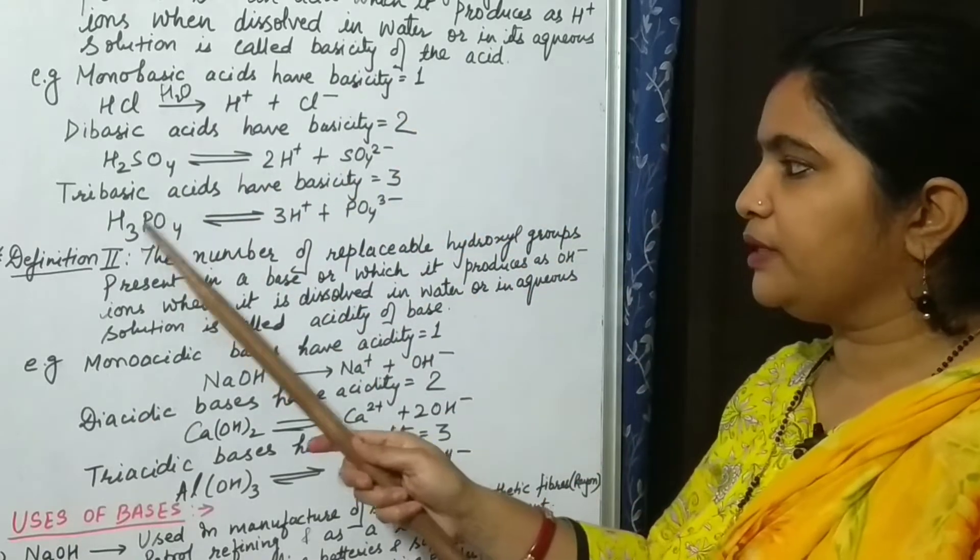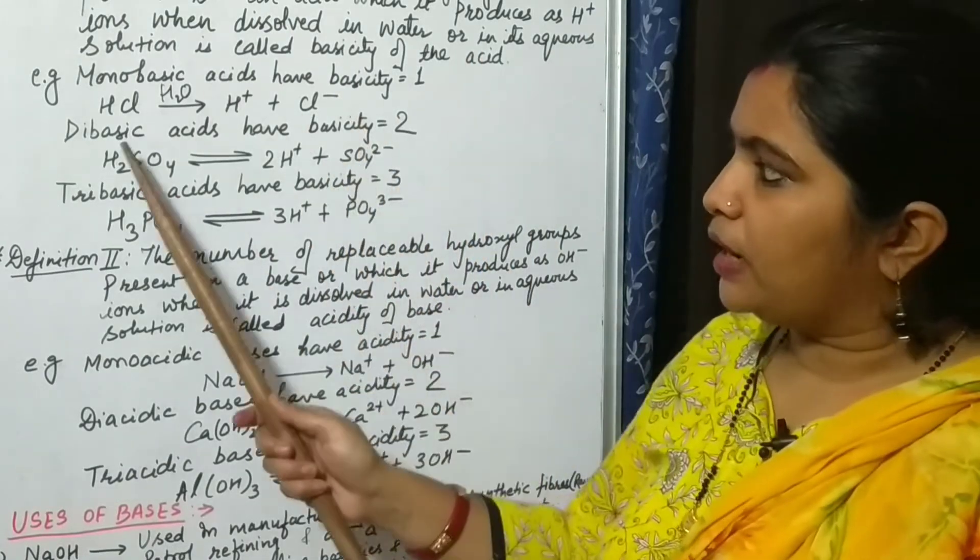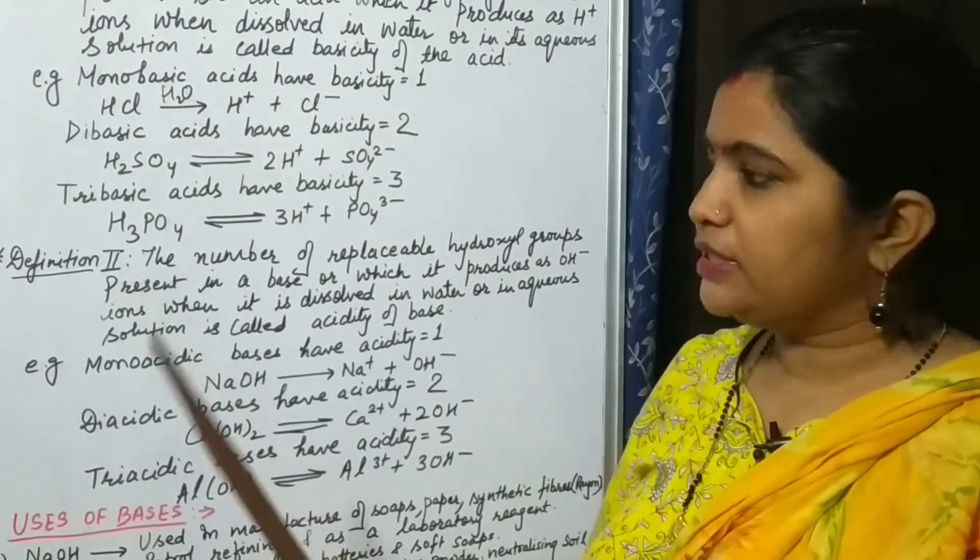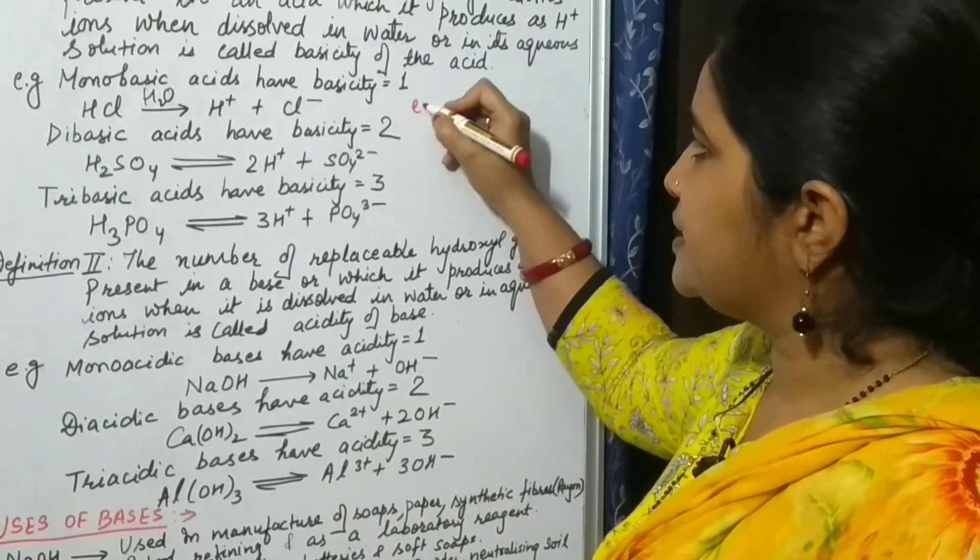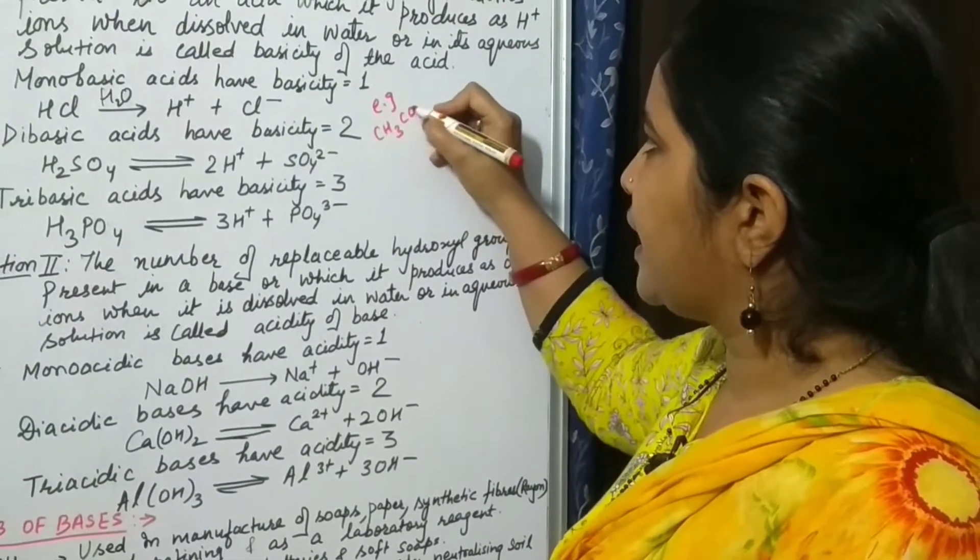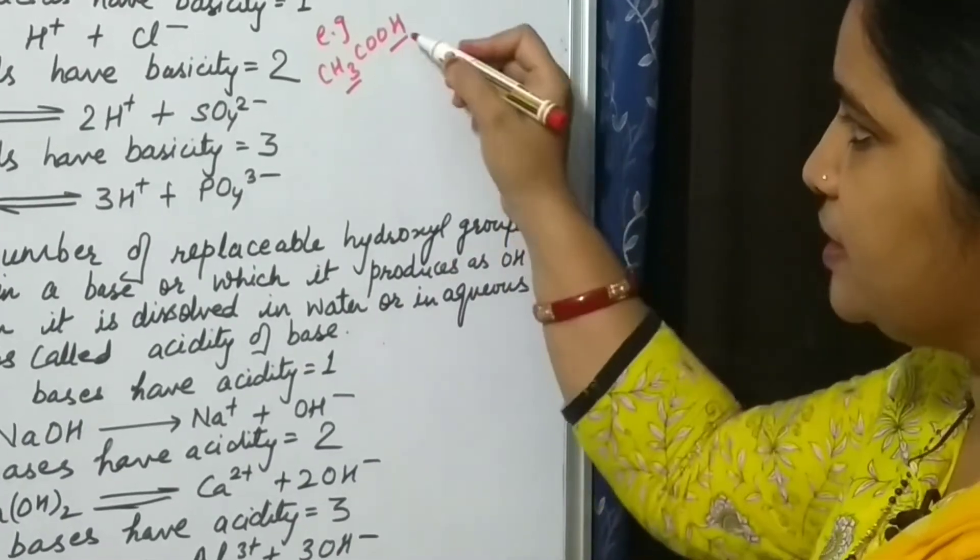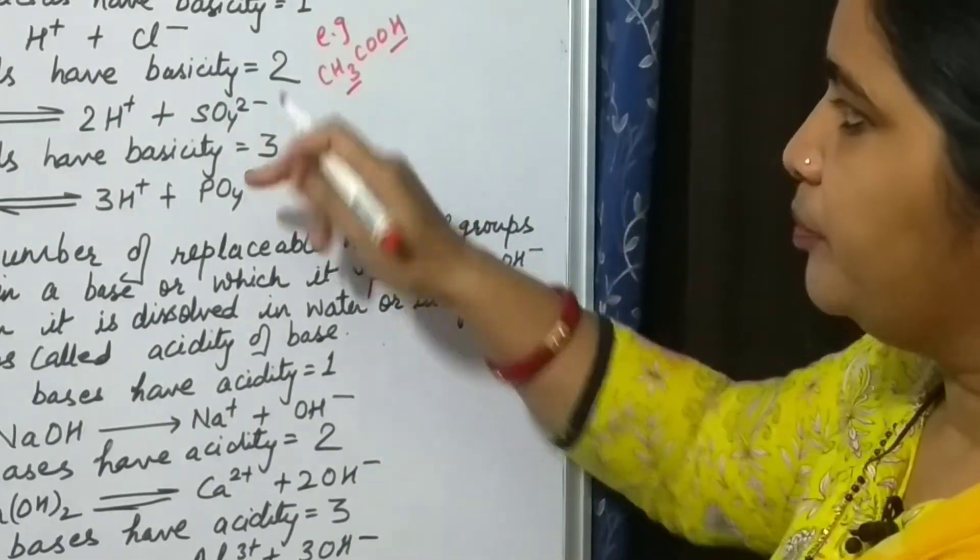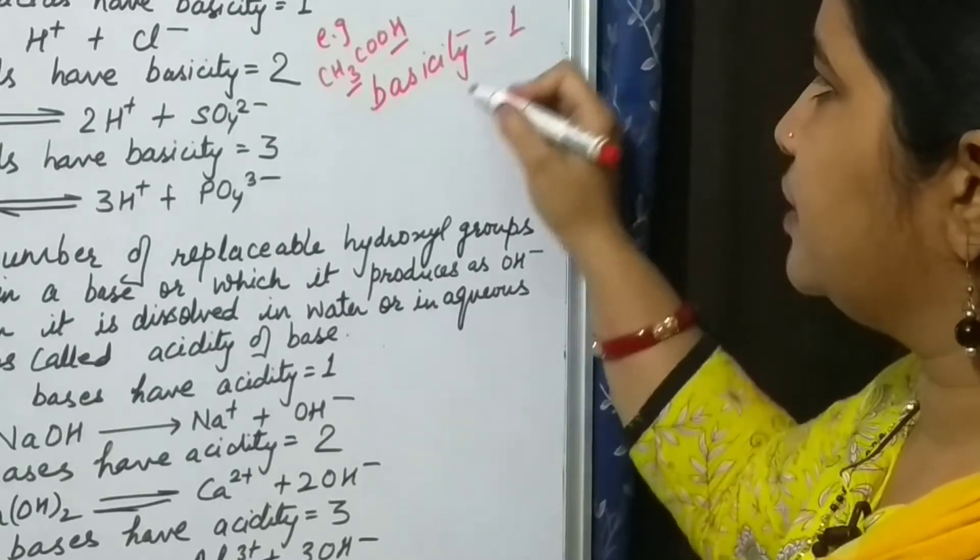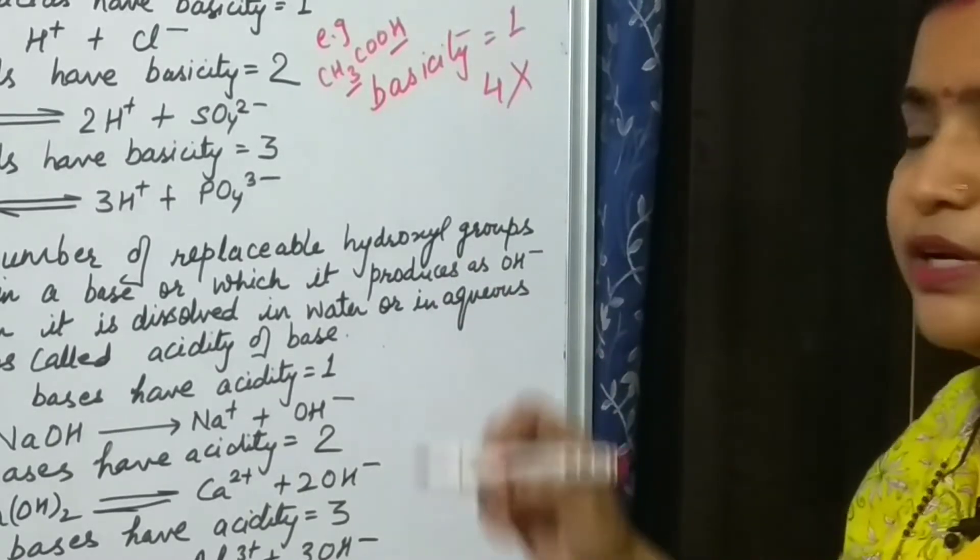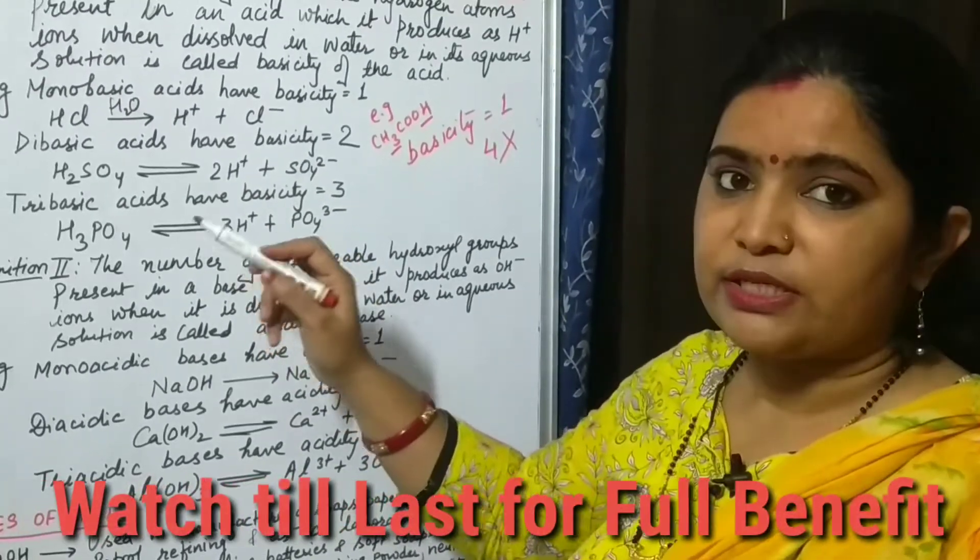Similarly, tribasic acids have basicity three because here three H+ ions are liberated. See, don't confuse it with how much hydrogen atoms is attached to a compound. This is not at all the concept. Here children, you could see I am giving you another example. Suppose I am taking acetic acid. You could see that acetic acid has four hydrogen atoms present in it. So does it have basicity four? You should know that its basicity is only one, not four. So never compare with the concept that the number of hydrogen atoms present in an acid shows its basicity.